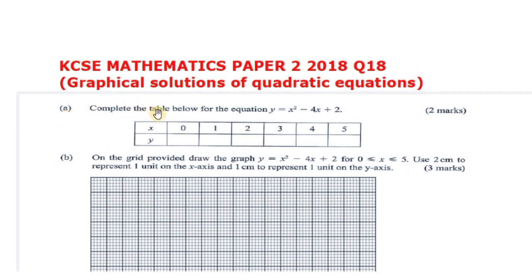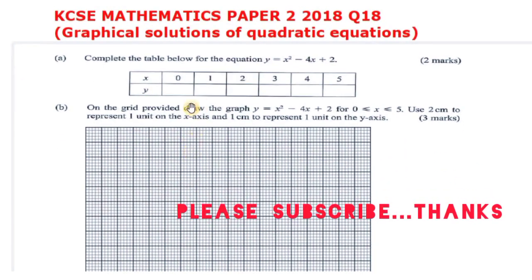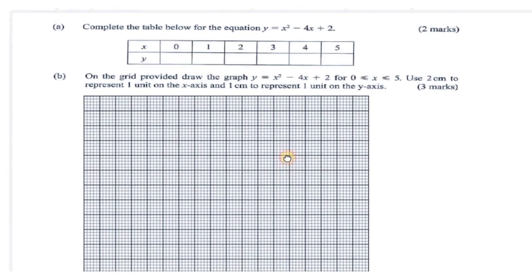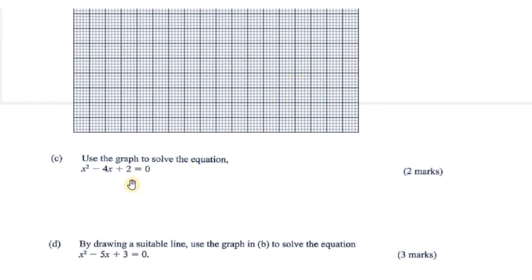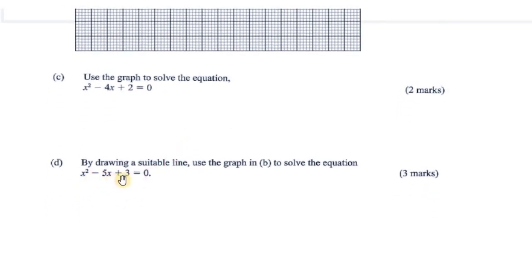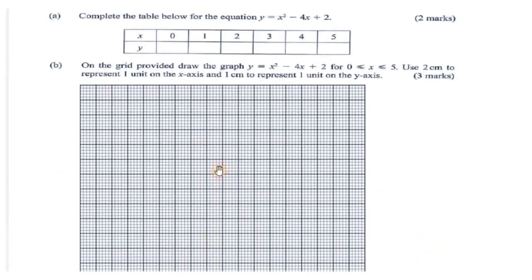For part A, complete the table below for the equation y = x² - 4x + 2. We have the table as shown, then on the grid provided draw the graph y = x² - 4x + 2 for values of x between 0 and 5, using 2 centimeters to represent 1 unit on the x-axis and 1 centimeter to represent 1 unit on the y-axis. For part C, use the graph to solve x² - 4x + 2 = 0, and finally x² - 5x + 3 = 0.